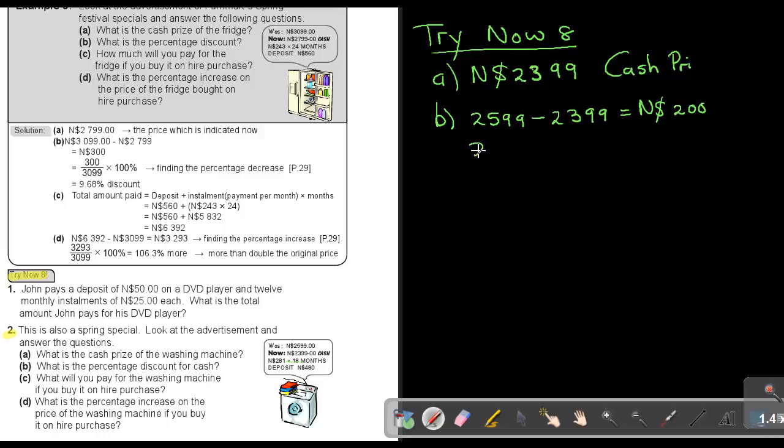I take this $200 and divide by the original $2,599. To make it a percentage, multiply by 100%, giving 7.7% discount.